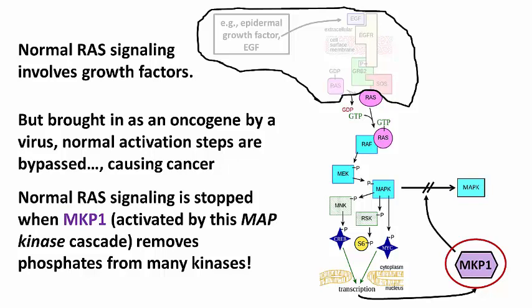An active oncogene, however, would exceed the cell's capacity to dephosphorylate mitogenic kinases. And that's why cancers develop.